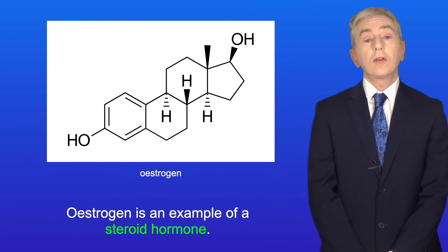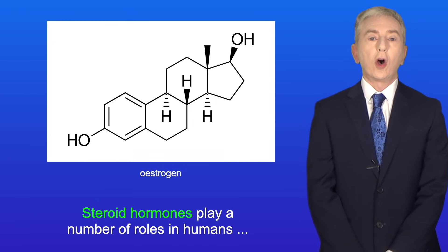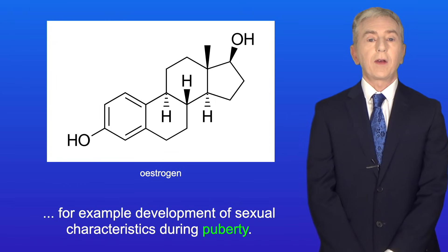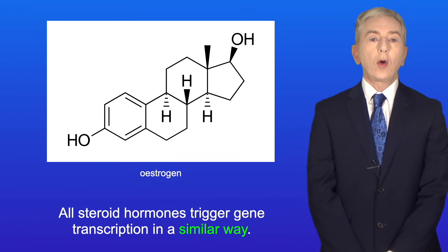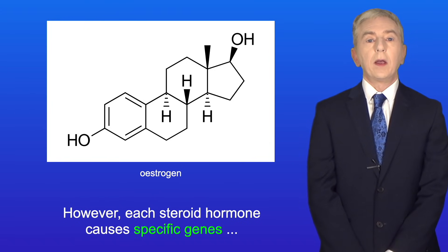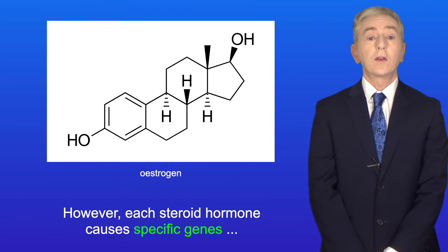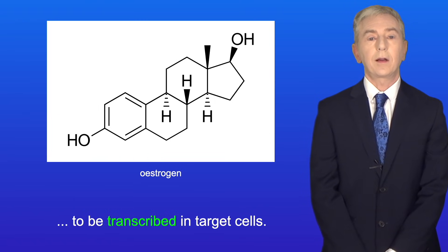Oestrogen is an example of a steroid hormone and steroid hormones play a number of roles in humans, for example development of sexual characteristics during puberty. All steroid hormones trigger gene transcription in a similar way, however each steroid hormone causes specific genes to be transcribed in target cells.